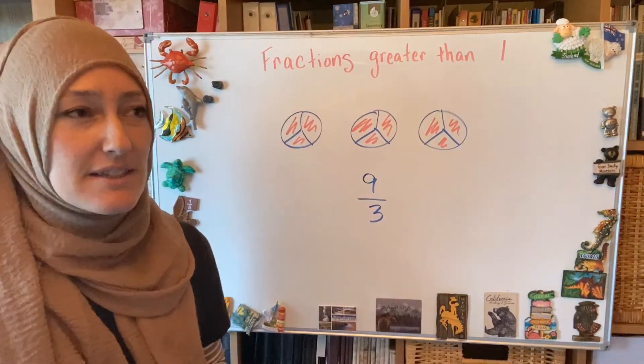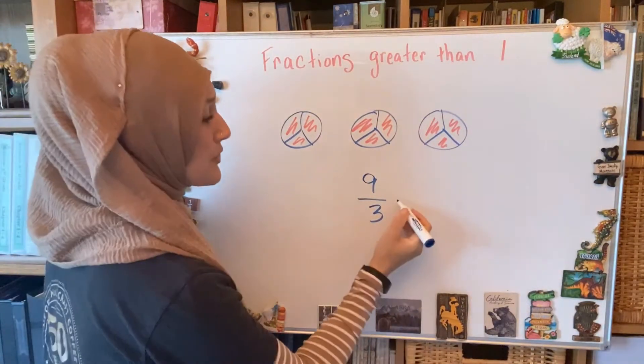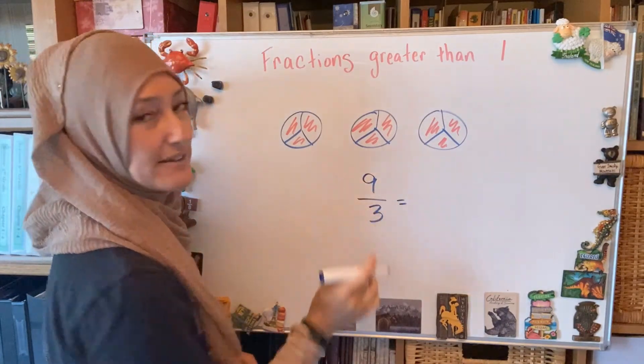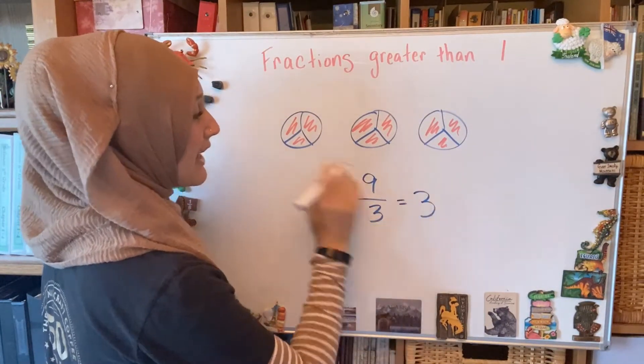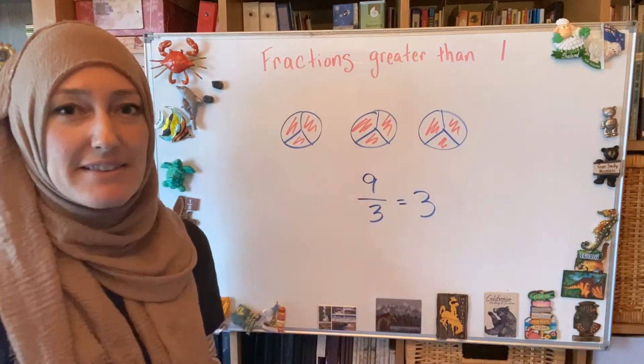I can check this really easily because if I divide it, what do I get if I divide nine divided by three? Three, I get three, and that is the number of wholes that I have.